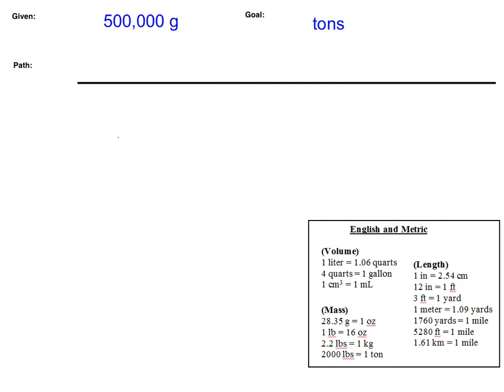All right, as we have done in the previous slides, please pause the video and try this one out on your own, and I will provide the answer to you in a few seconds. For this problem, you may actually get two different answers — you might get an answer of 0.55 tons, or you might also get an answer of 0.5511 tons. The reason for that is there are actually two different paths you can take, and sometimes this happens with conversions. Just like if you wanted to convert feet into miles, you could say 5,280 feet equals 1 mile, or you could convert feet to yards to miles.